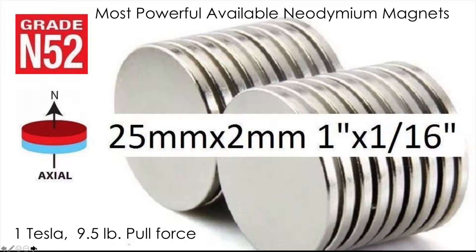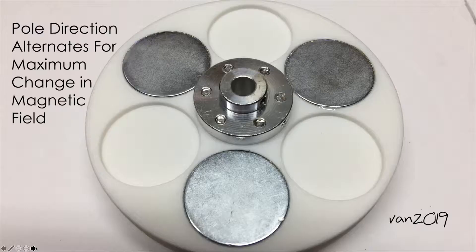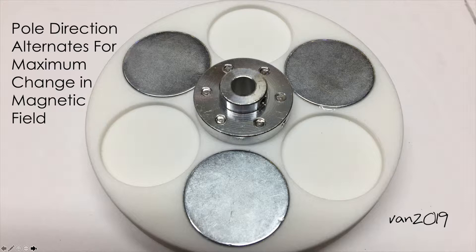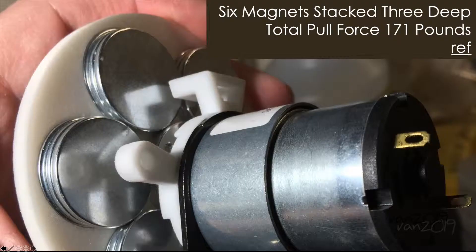And these magnets, these great N52 neodymium magnets, are the most powerful magnets available. Each little disc, which is about the size of a quarter, generates nearly a 10 pound pull force at around one tesla of magnetic field strength. When these magnets are placed into the rotors, I place them such that their poles alternate, so they'll be north, south, north, south, north, south, and this gives the maximum possible change of magnetic field as the rotors turn.